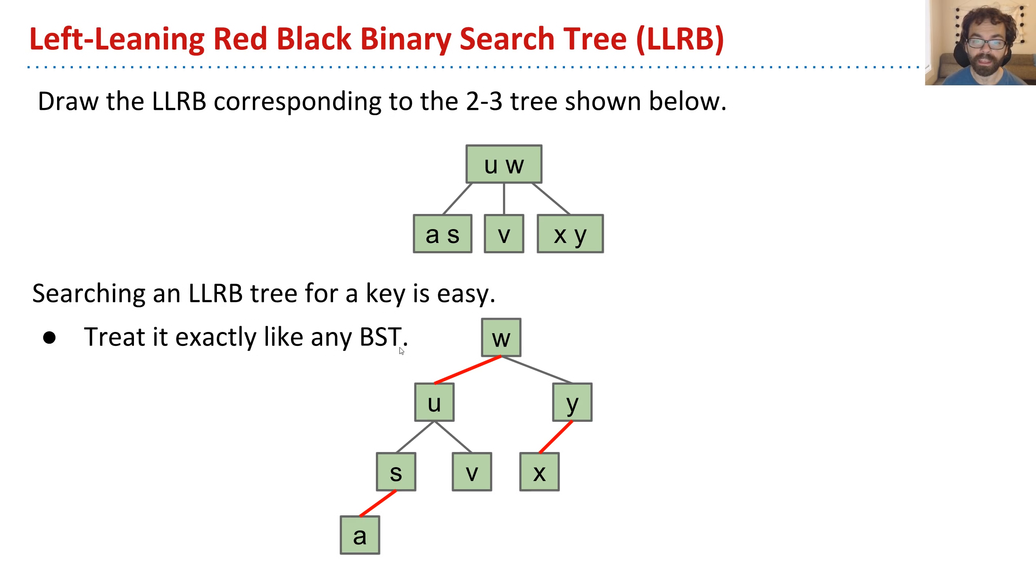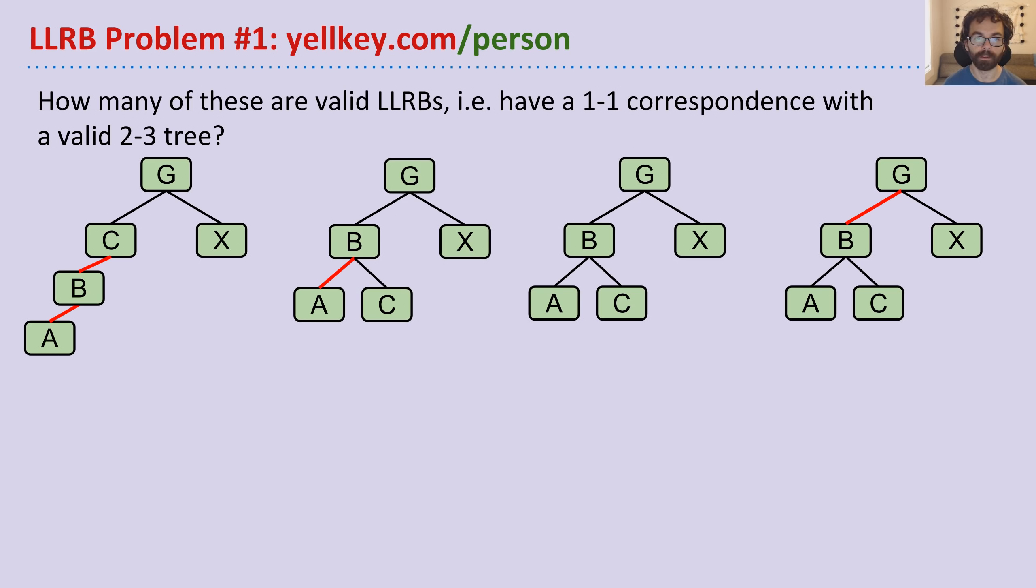So for example, if I want to find x, I look at the root and I compare x to w. x is bigger, so we go right. x is smaller, so we go left. x, we found it. The fact that this node, or that this link is red, has no impact whatsoever on our contains operation. It is literally exactly the same as before.